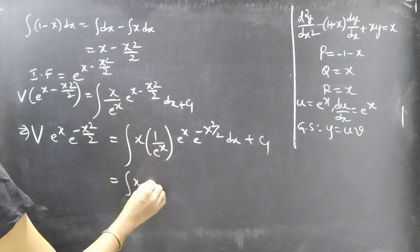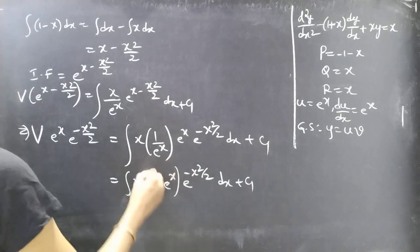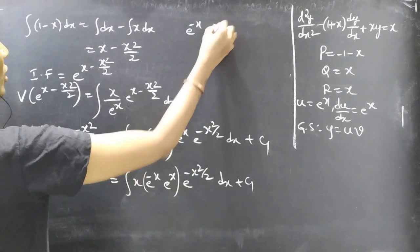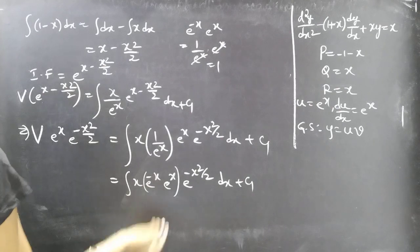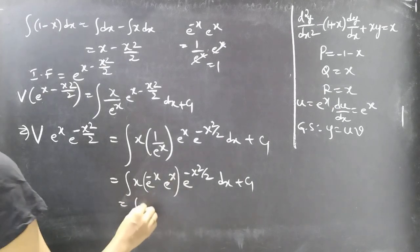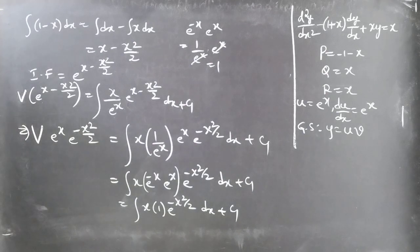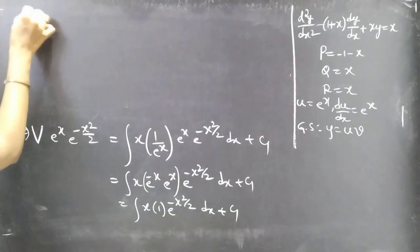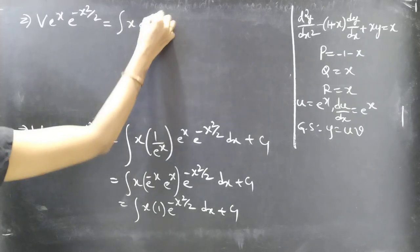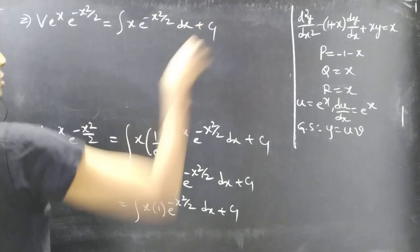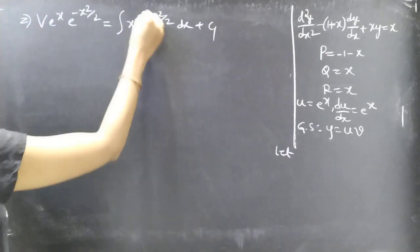Simplifying: ∫x · e^(-x) · eˣ · e^(-x²/2) dx + C₁. Since e^(-x) · eˣ = 1, this reduces to ∫x · e^(-x²/2) dx + C₁. Now let t = -x²/2, so dt/dx = -x, meaning x dx = -dt.